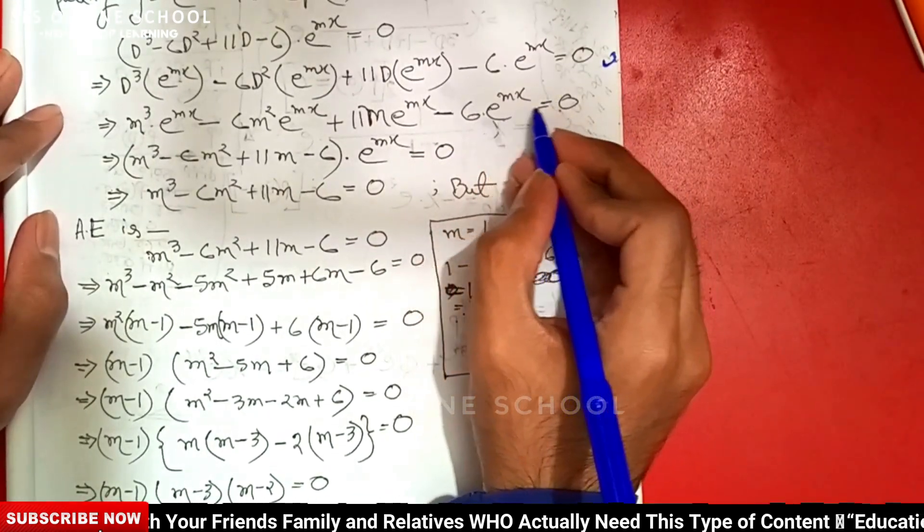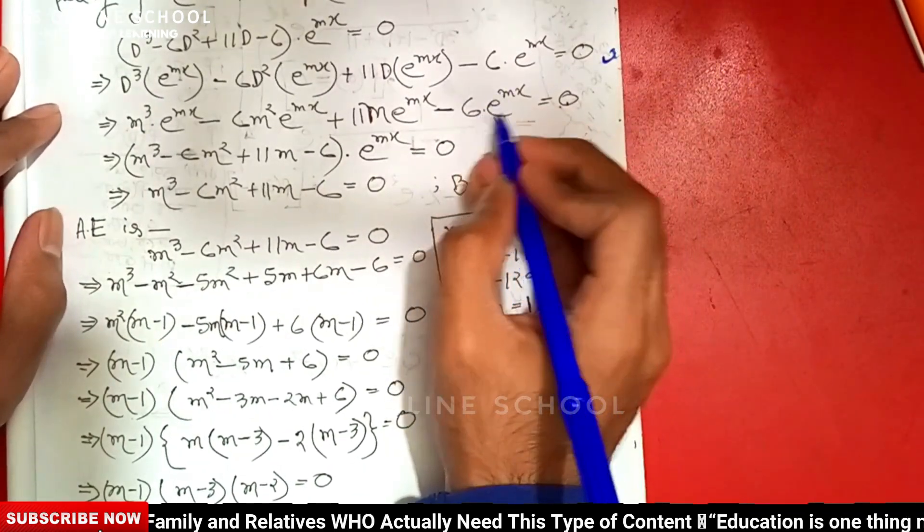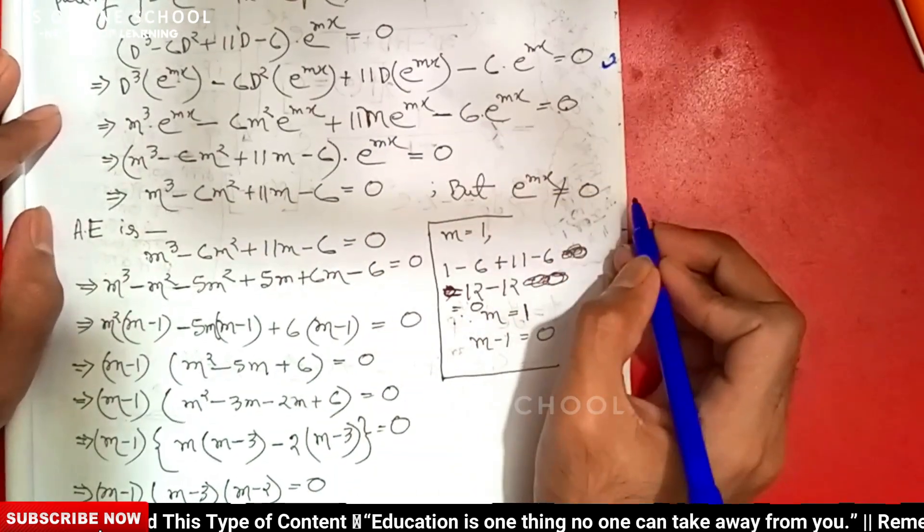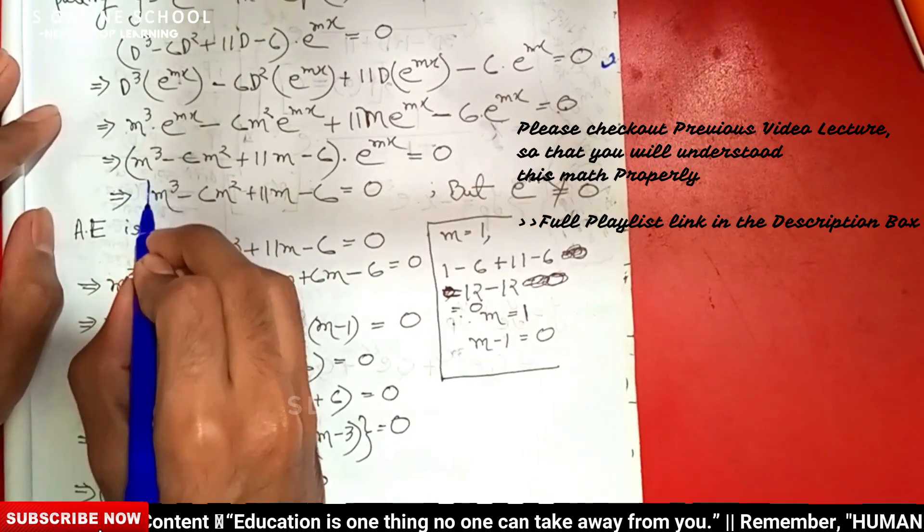Recognizing e^(mx) is not equal to zero, so we can divide by this value.